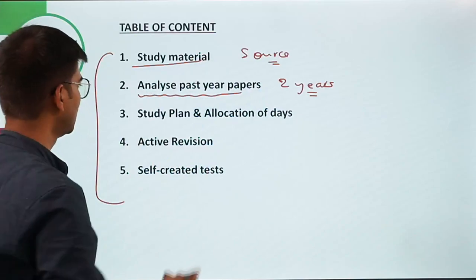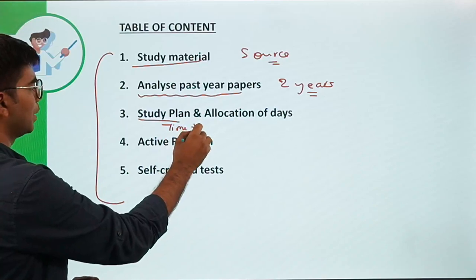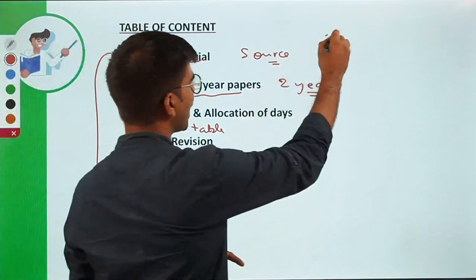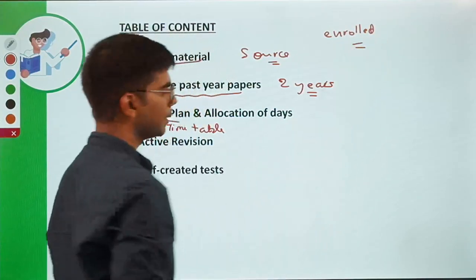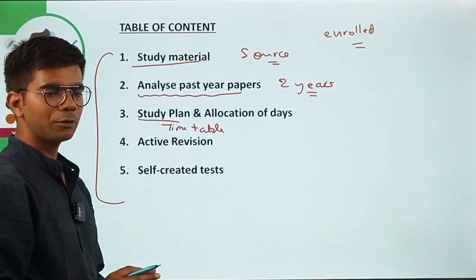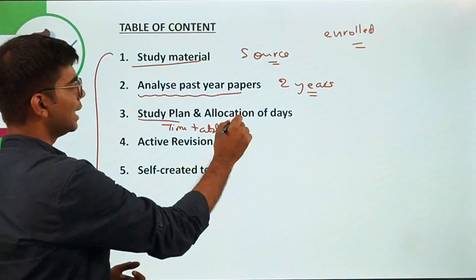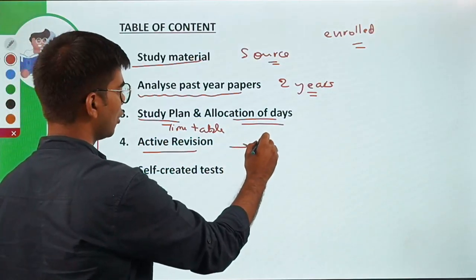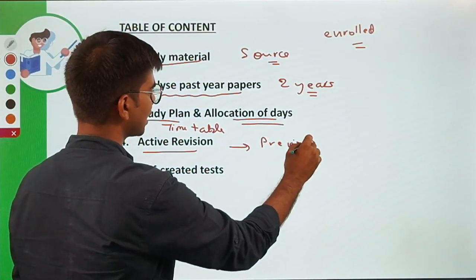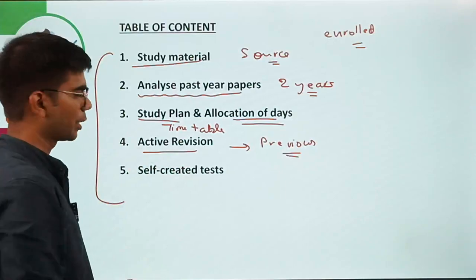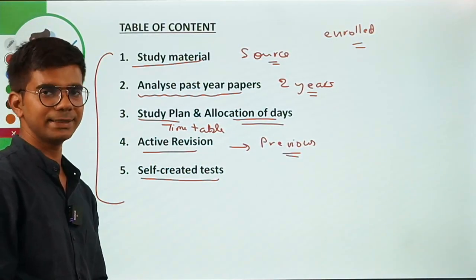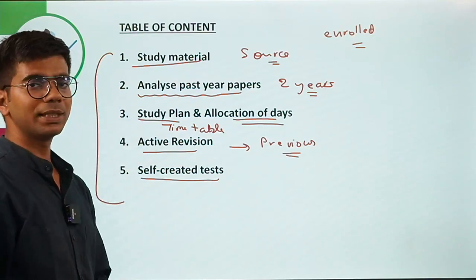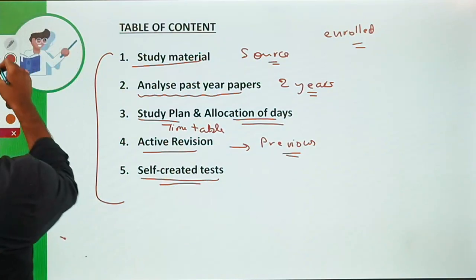You can analyze those past 2 year papers. Then you have to create your own study plan or timetable — this is very crucial. You also need active revision, and finally you can create your own sectional tests to check whether you are progressing and to identify your strengths and weaknesses.